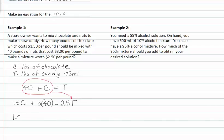We'll then have 1.5C plus 120 equals 2.5 times 40 plus C. This will give us 1.5C plus 120 is equal to 100 plus 2.5C.